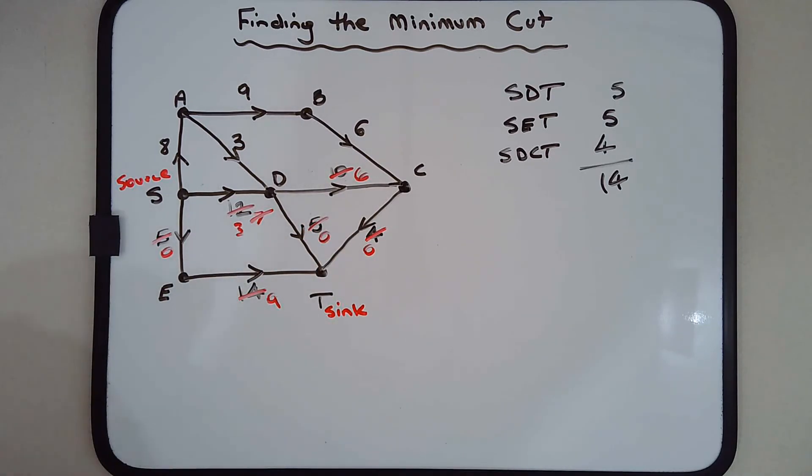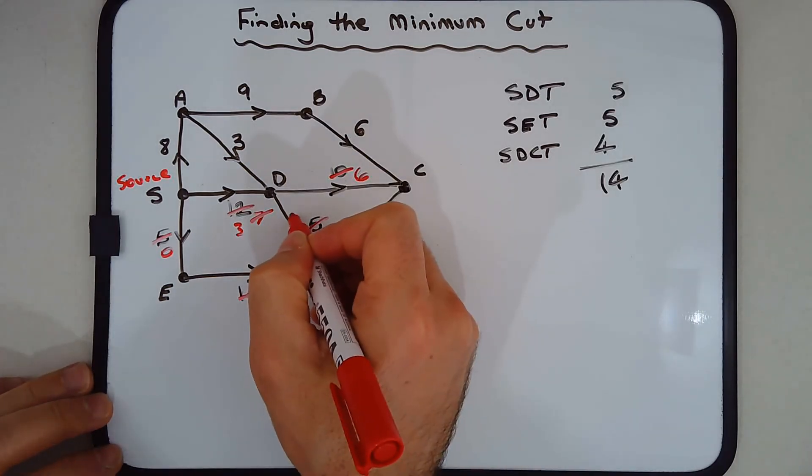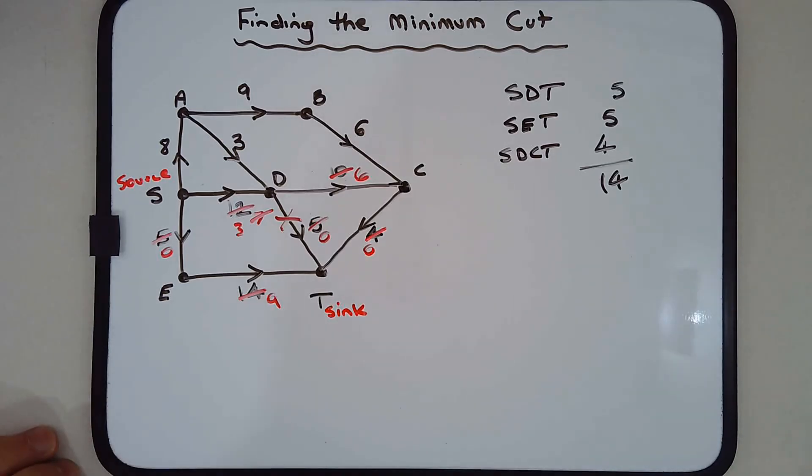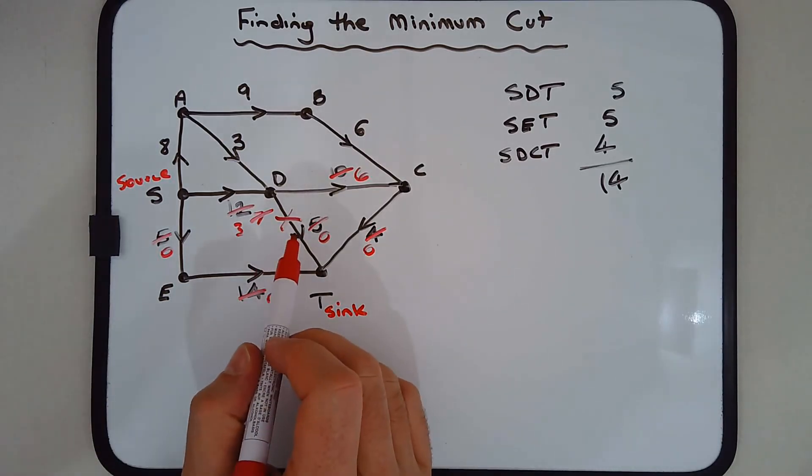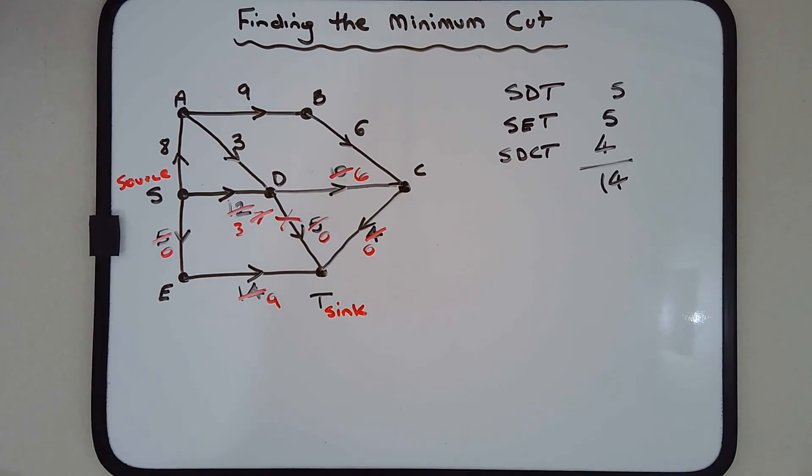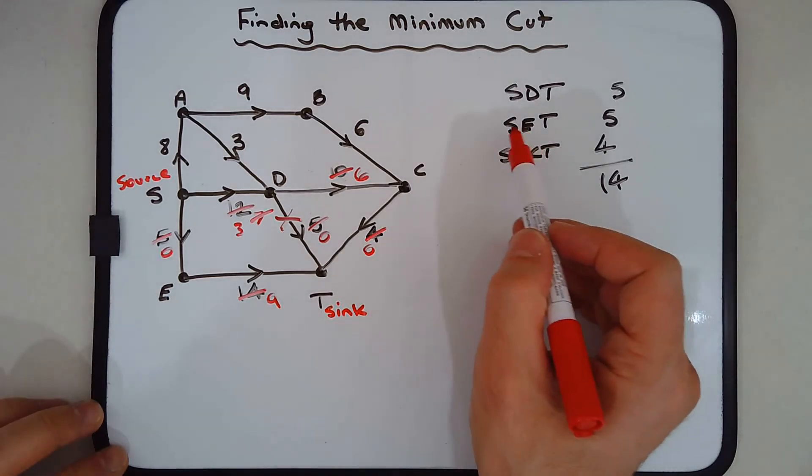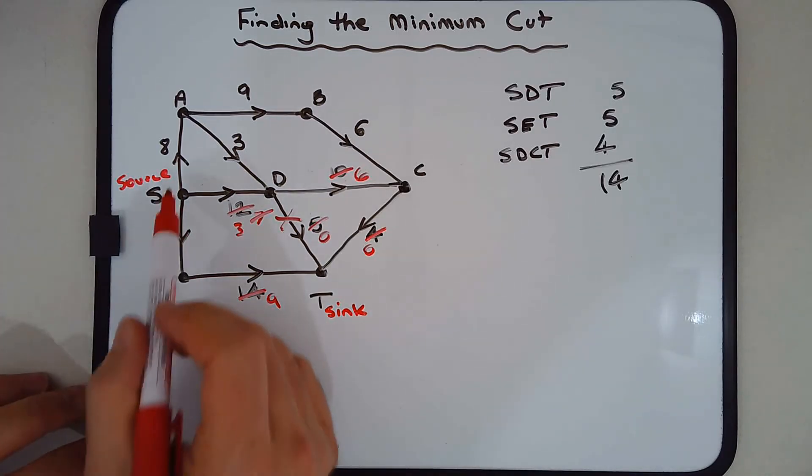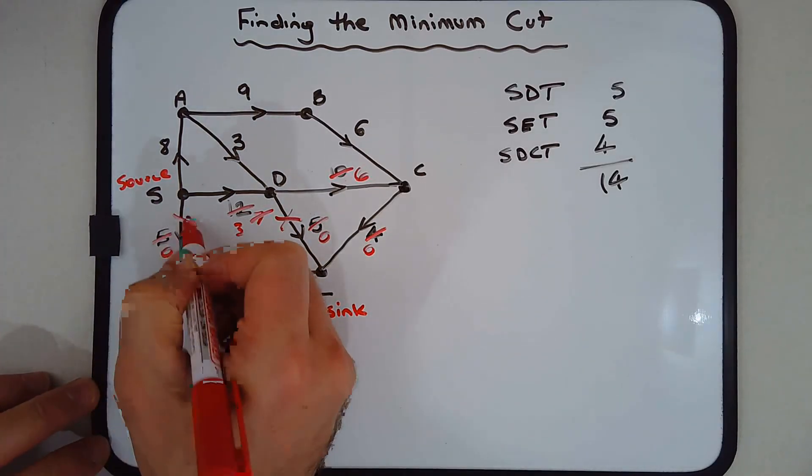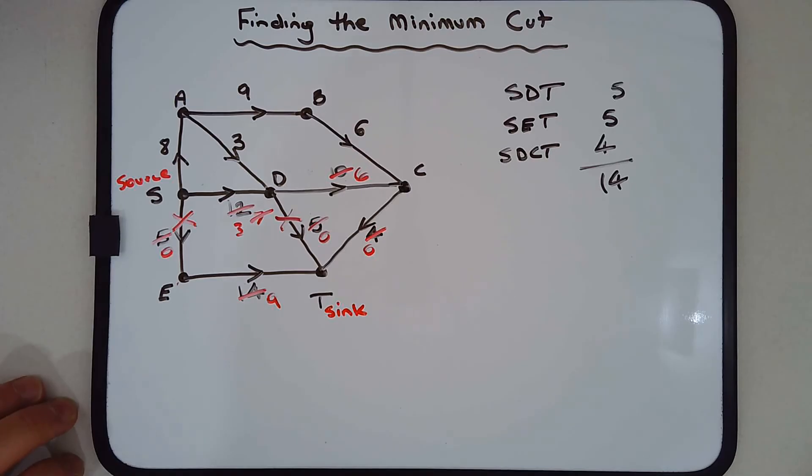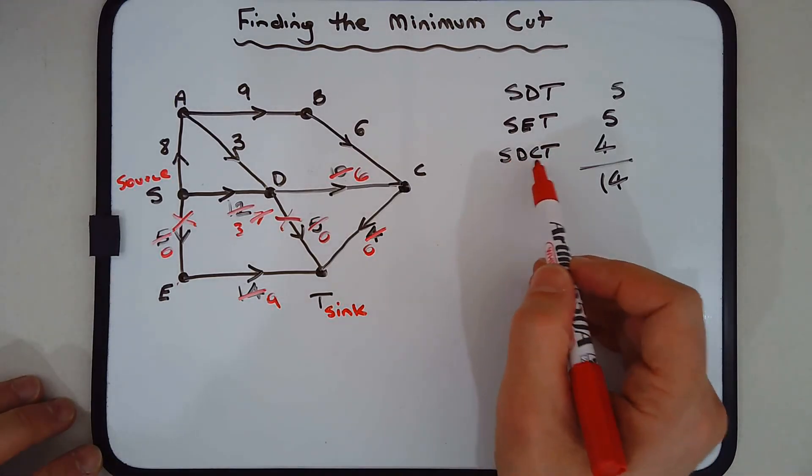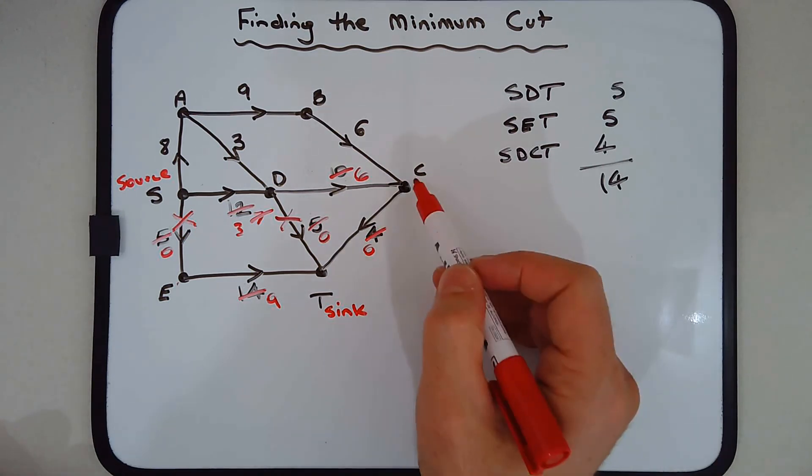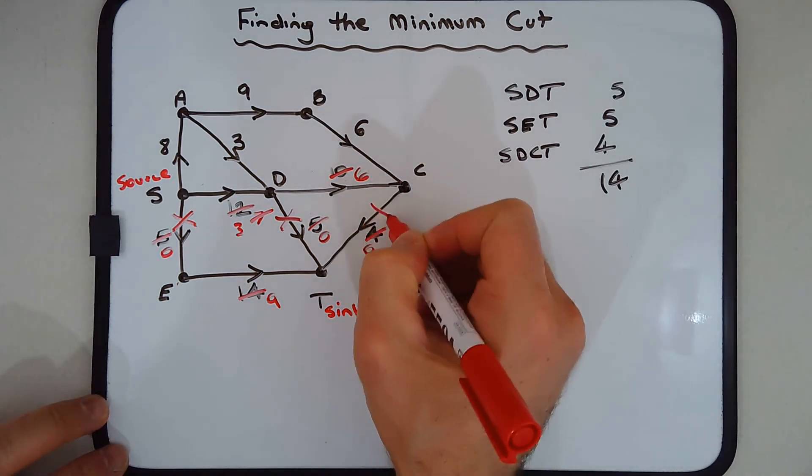The minimum cut will have to pass this point or cross this point. Now for SET, the edge of minimum weight is SE, so the cut would also have to pass through there. And for SDCT, the edge of minimum weight is CT, so I'm going to put a big X there.